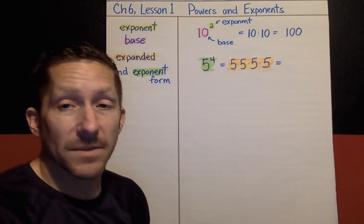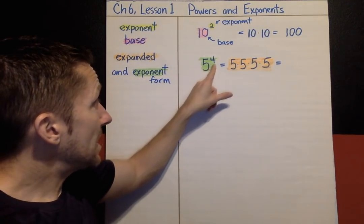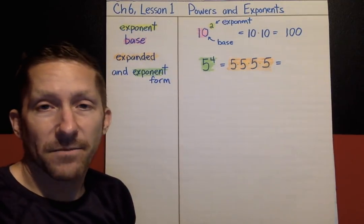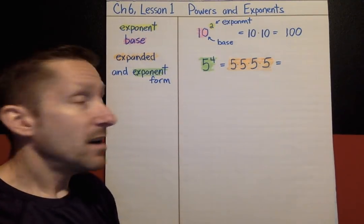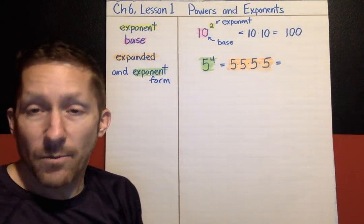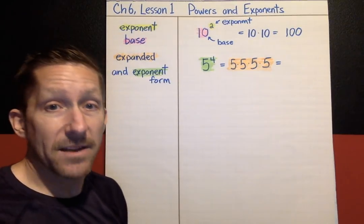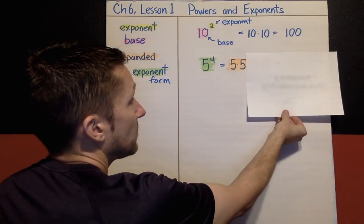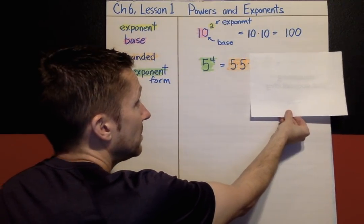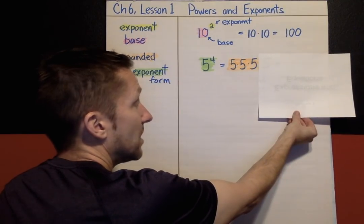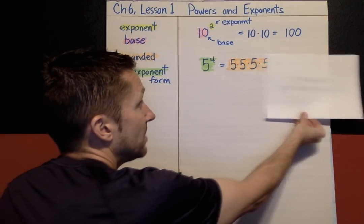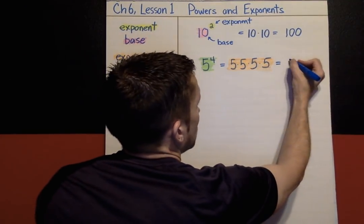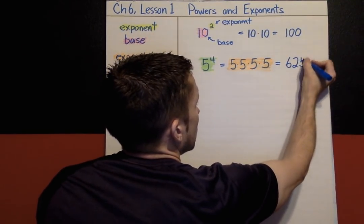If you are making exponent mistakes — if you look at that and you are thinking that's 20, 5 times 4 makes 20 — then you should always be writing it out in expanded form. This is not 5 times 4. It's 5 times 5 times 5 times 5. When you have an exponent in expanded form, you just work your way across: 5 times 5 times 5 times 5 makes 625. So the answer to this is 625.